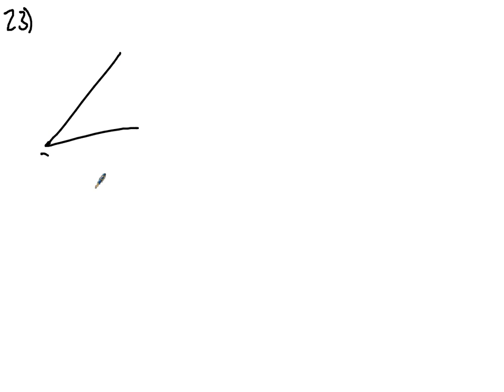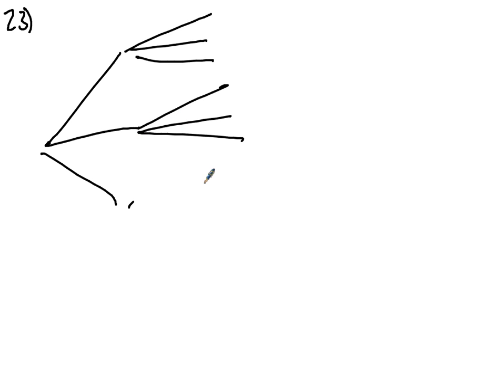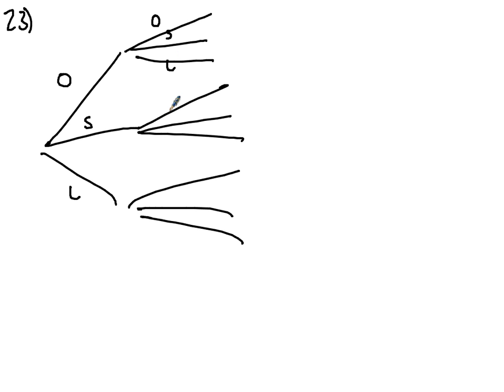For this one, what I always like to draw is a quick tree diagram. She's picking two sweets, so we've got orange, strawberry, and lemon as first branches, then orange, strawberry, lemon again for each second branch. The probability of picking an orange first is 3 out of 9, strawberry is 4 out of 9, and lemon is 2 out of 9.